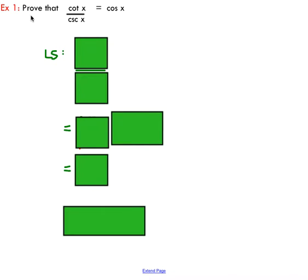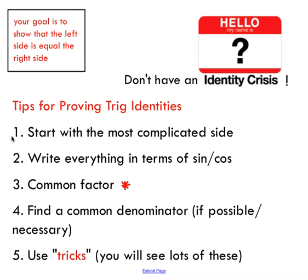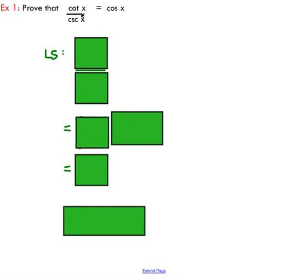So first example, it just says prove that cotangent of x over cosecant of x is equal to cos of x. So your goal is to show that this left side is equal to the right side. Now it's good practice with trig identities to only focus on one side, not both. You don't want to flip flop back and forth.